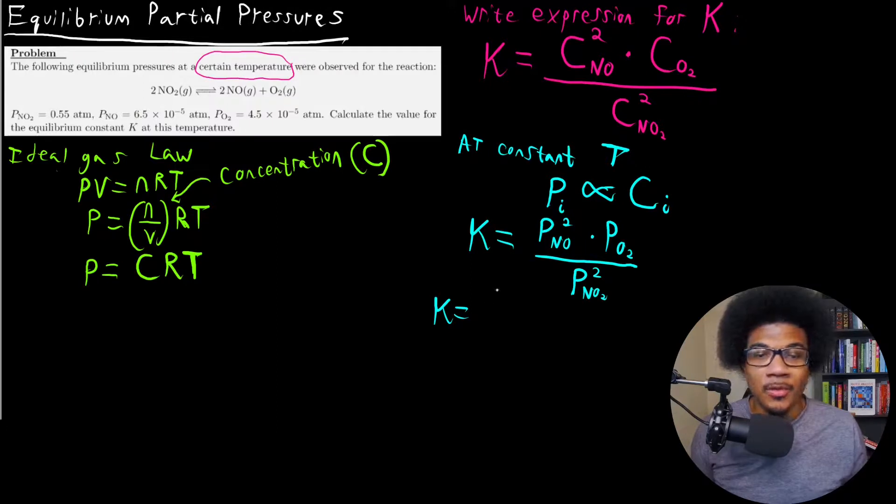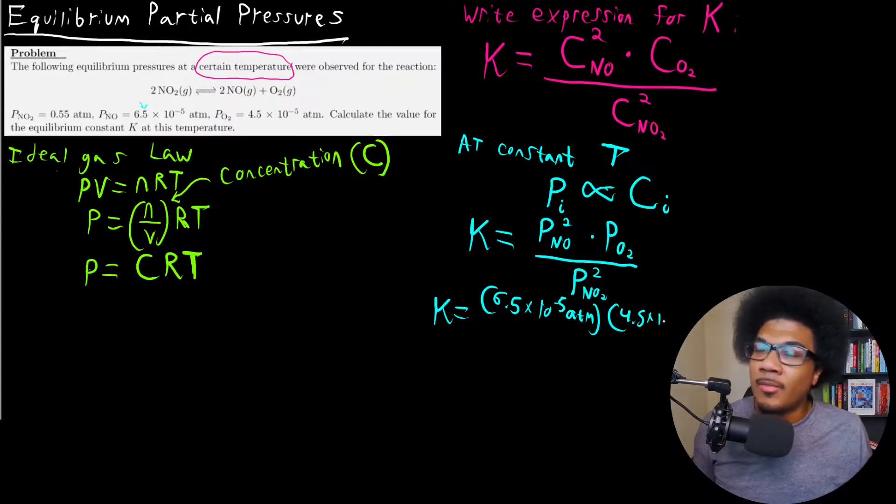So now all we have to do is just substitute all of our partial pressures in and we get the final result. So the partial pressure of NO is given here. So we got 6.5 times 10 to the negative 5 ATM up top. And O2, we got 4.5 times 10 to the negative 5 ATM.